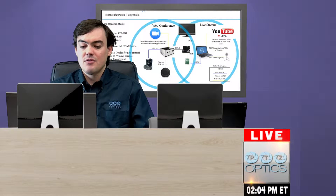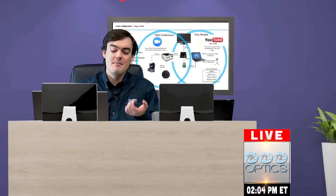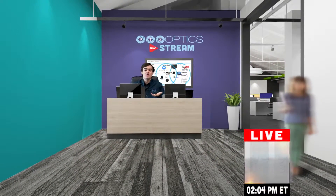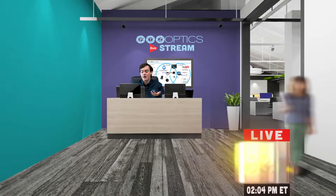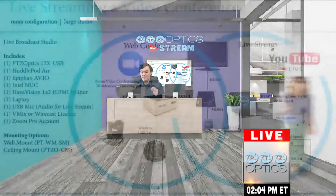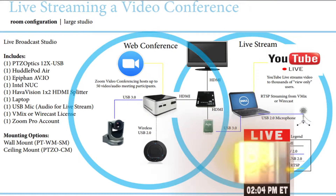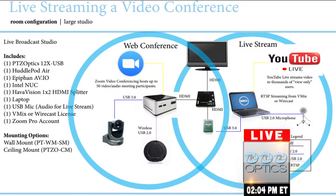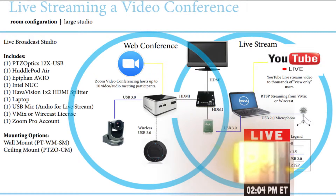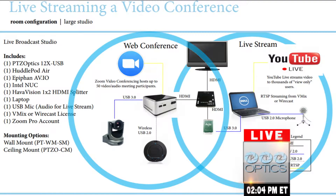Virtual sets can really make webinars pop, it can make them stand out, and the way that we do virtual sets is actually quite simple. Basically, what's happening here is we have a web conferencing system — you've got a camera and a microphone attached to a computer — and then we take the video conference or webinar and bring it into a computer that has live streaming software, such as Wirecast or Vmix.